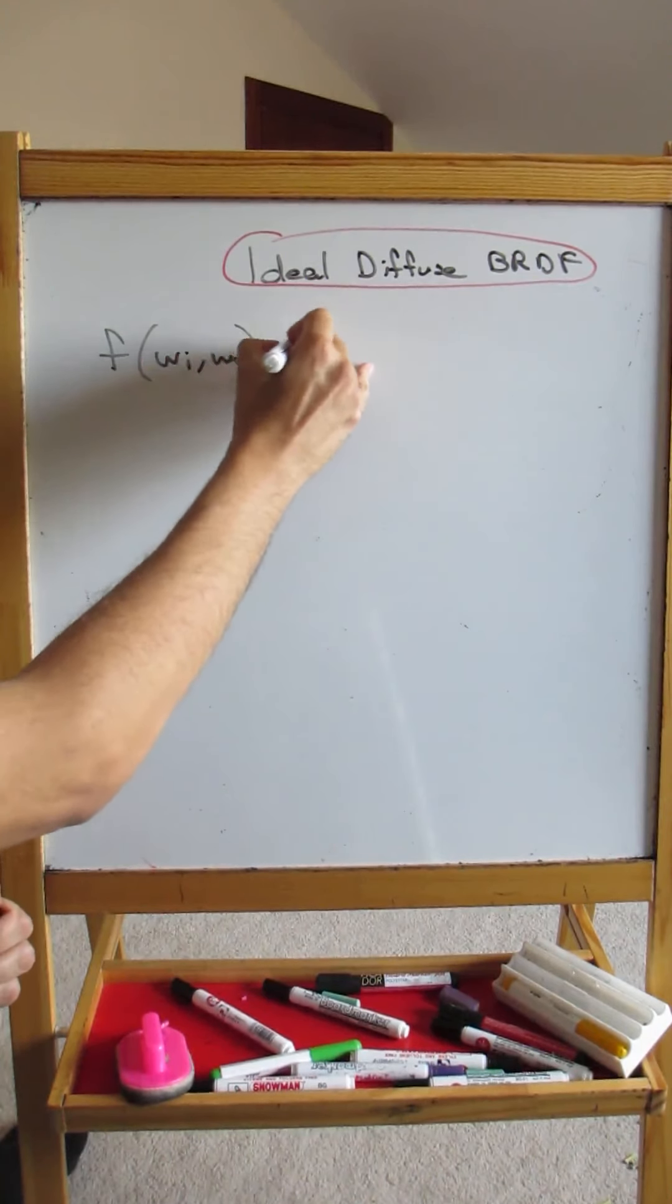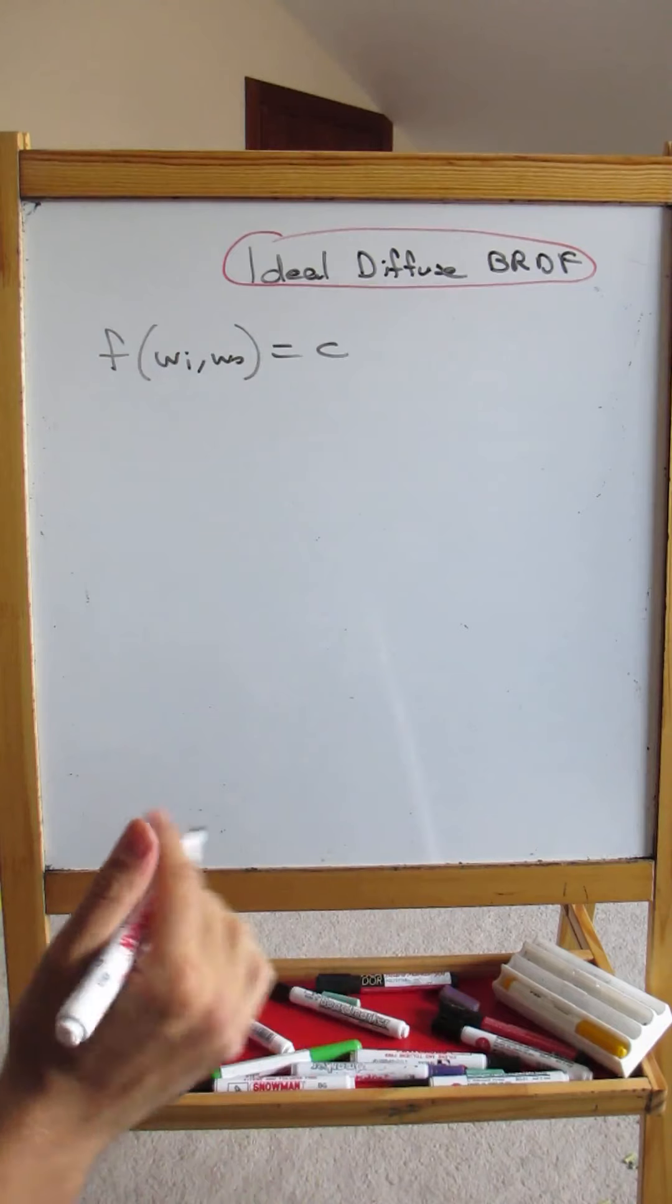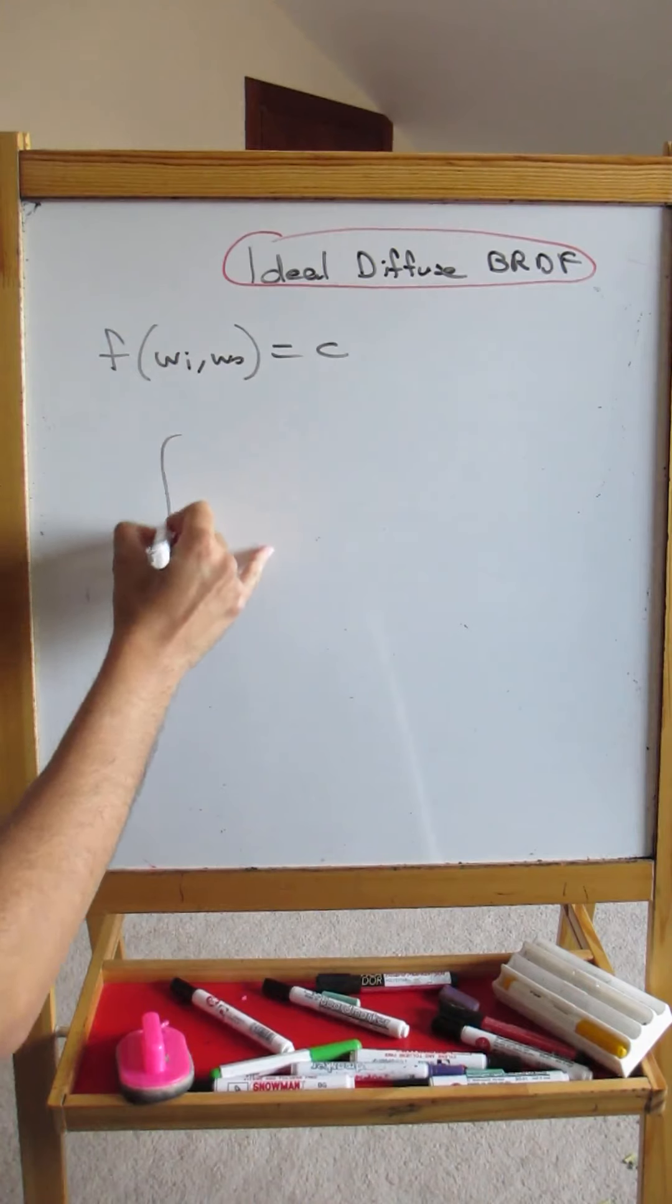So for an ideal diffuse BRDF, we say F(Wi,Wo) is equal to C, constant. And let's say there is no absorption. So everything that's the light that's received is emitted.